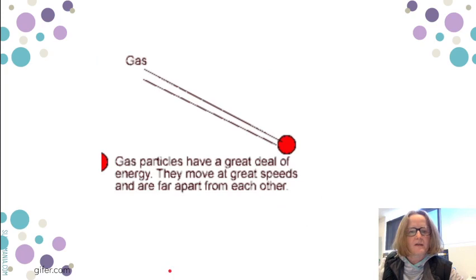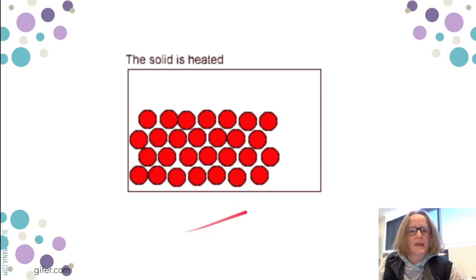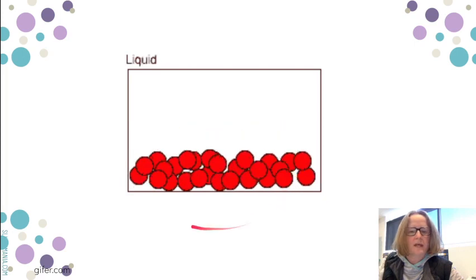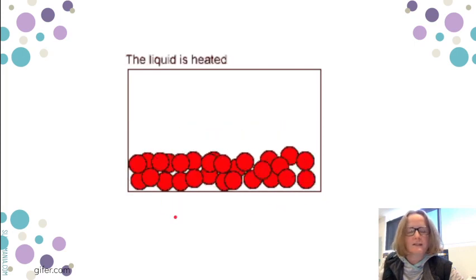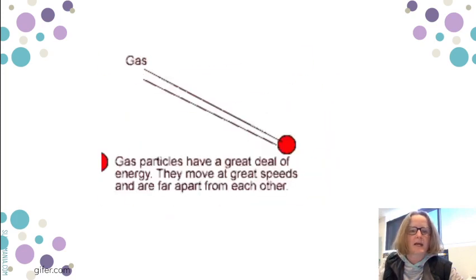We start at the beginning with a solid and the particles are vibrating and as you heat and you heat, you'll notice the solid doesn't fill the edges of the container and eventually the particles break away from their neighbors, they start rolling past each other, keep heating and heating and eventually they can escape from the body of the liquid and become gas particles with all this energy moving at great speeds far apart from each other.